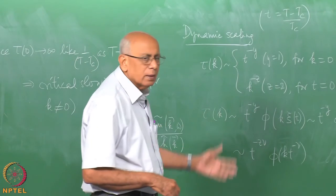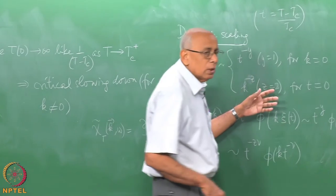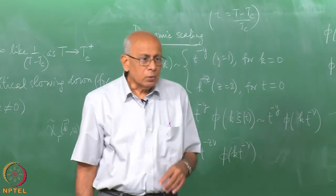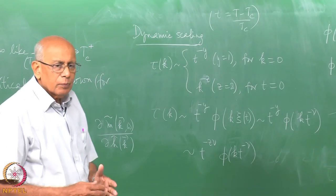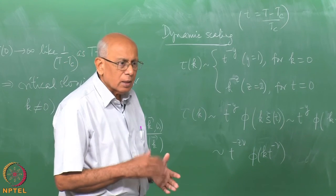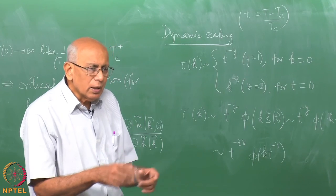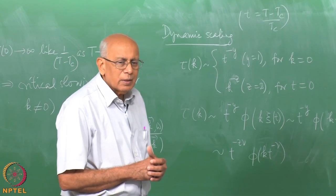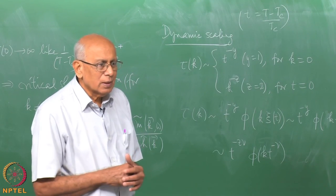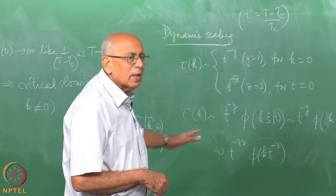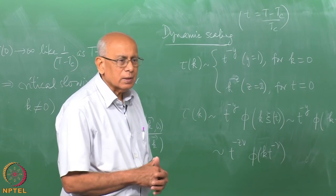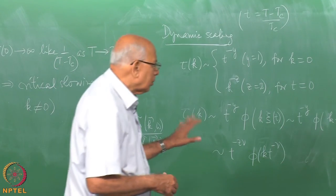In the case we have looked at, y equals 1 and z equals 2, but the whole idea is that these exponents can have different values beyond mean field theory, and indeed they do. There is a closely related equation for the growth of random surfaces — growth by aggregation — called the KPZ equation (Kardar-Parisi-Zhang equation), which is like the diffusion equation with a noise term added. This leads to so-called roughening exponents and similar results.